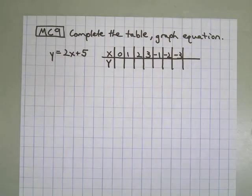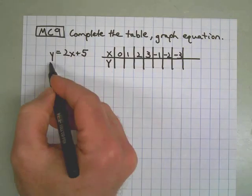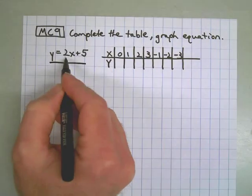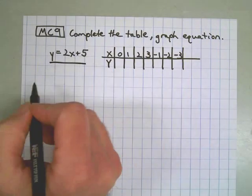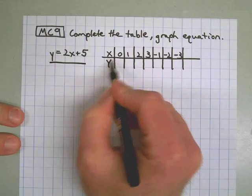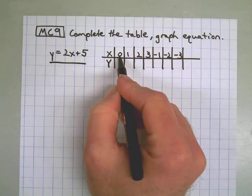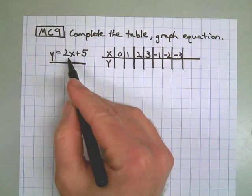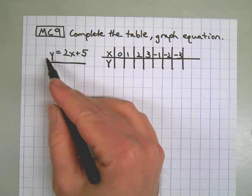MC9 first says, complete the table and graph the equation. Here's our equation, y equals 2 times x plus 5. The way these tables work is you take the number on top, which is the x value, substitute it into the equation, and then solve for y.